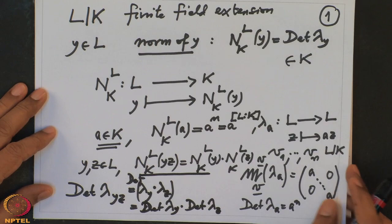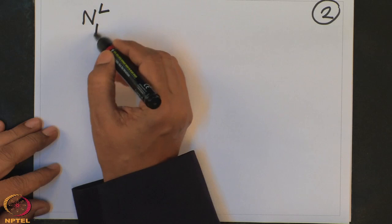The norm of 0 is 0, since it is the determinant of the zero matrix. So the norm is a map from L× to L×, and it is a group homomorphism, preserving multiplication.